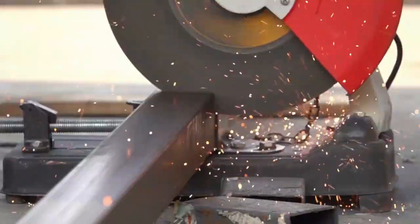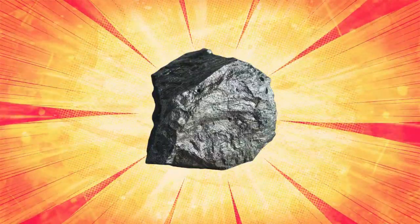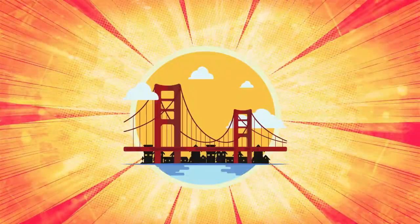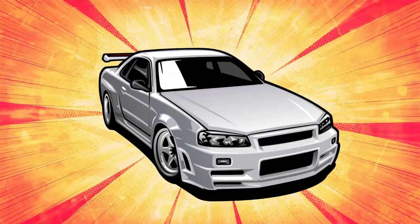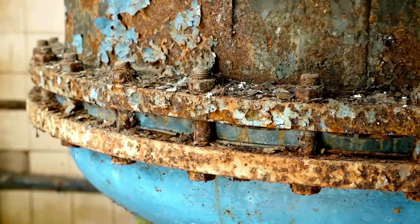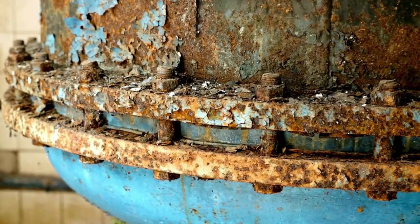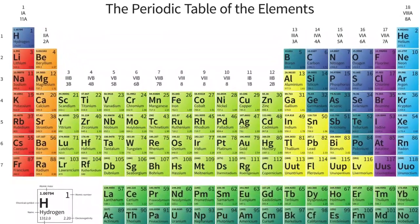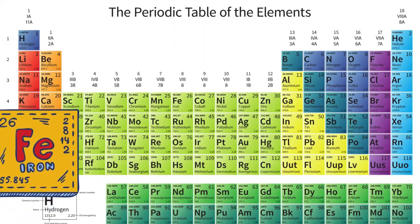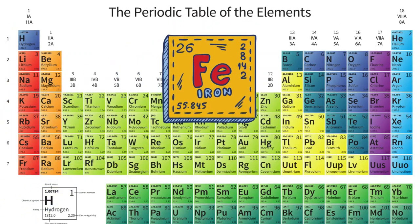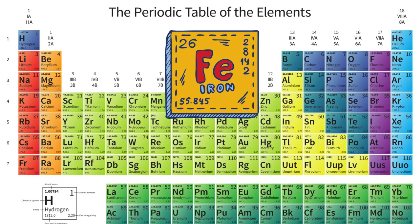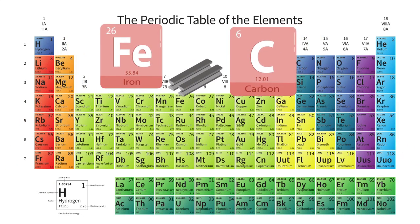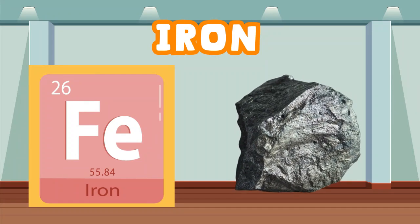Iron is the main ingredient or element used to make steel. Iron has a superpower — it's an incredibly strong and important material we use in bridges, buildings, and cars. But iron also has a weakness: iron rusts very easily. Can you see iron on the periodic table? It's number 26 — iron is the 26th element. Scientists have found out that if we mix iron with carbon to form steel, it makes it stronger.